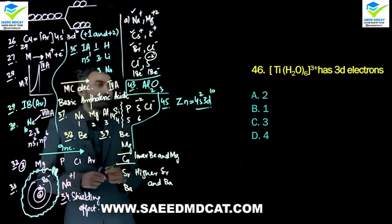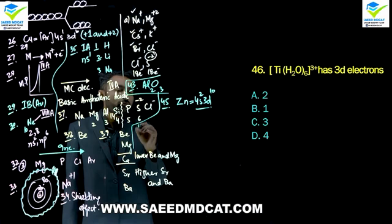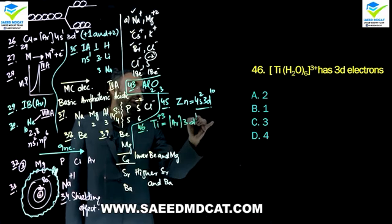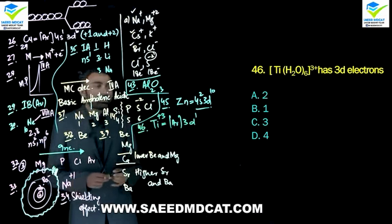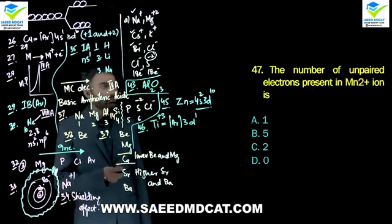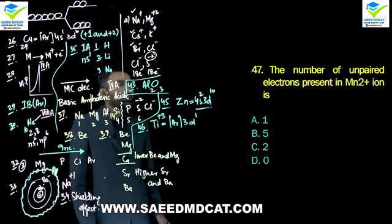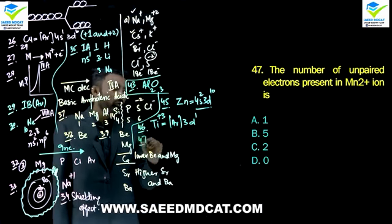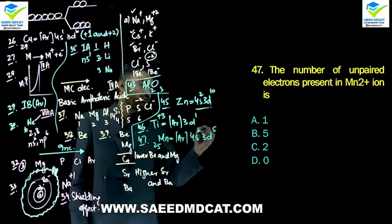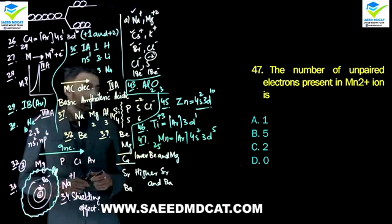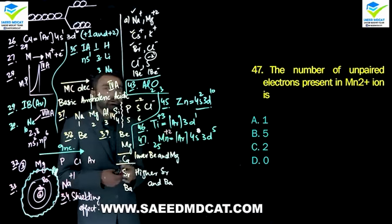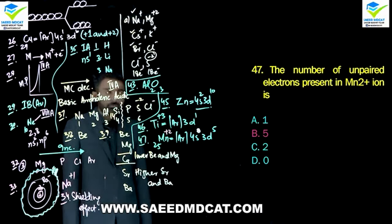Questions 46-47: Manganese (atomic number 25) has configuration [Ar] 4s2 3d5. When converted to Mn2+, the 4s electrons are removed first, leaving 3d5. With 5 electrons in d, beta option: all 5 are unpaired.